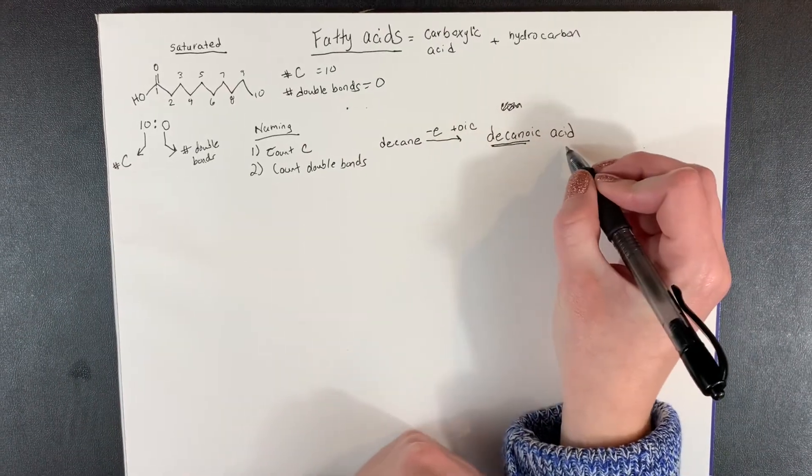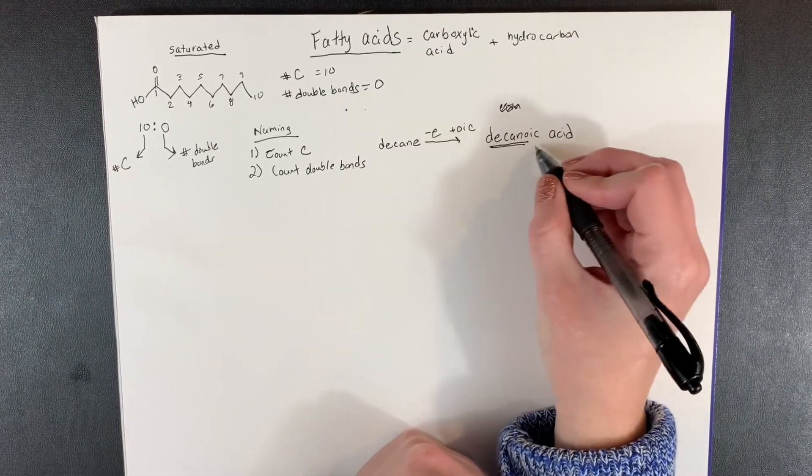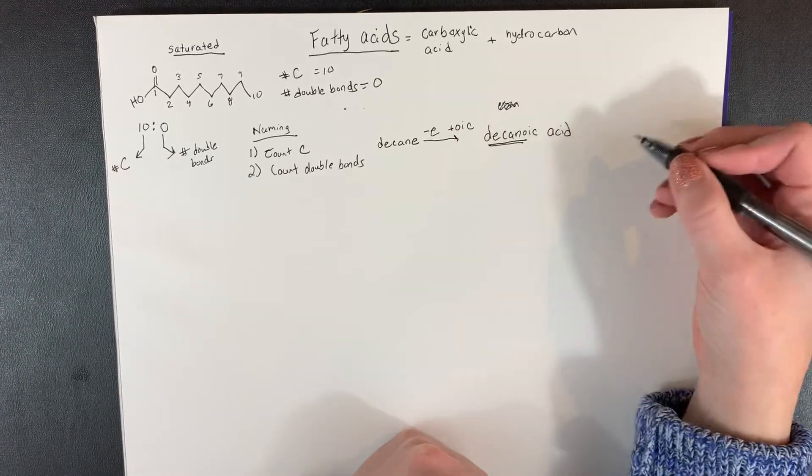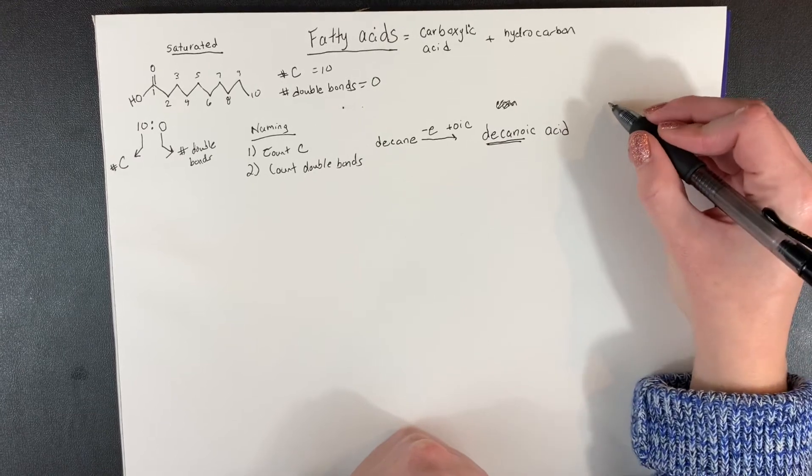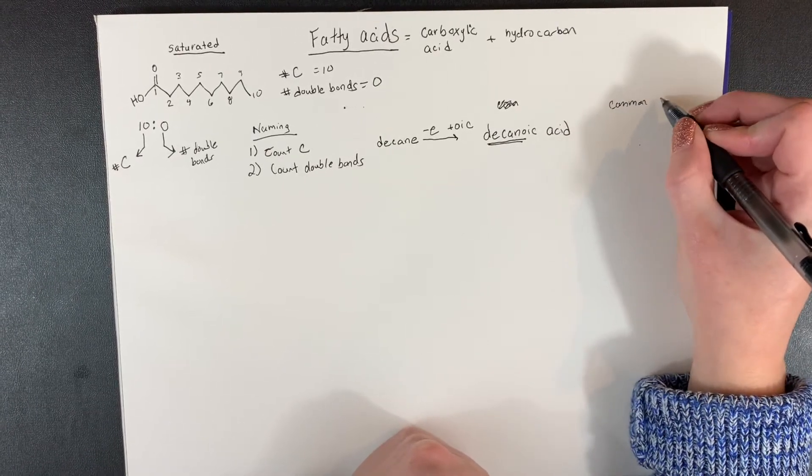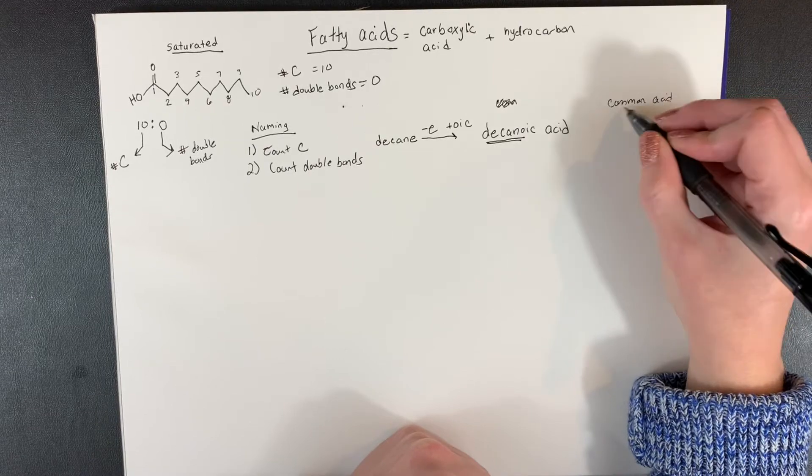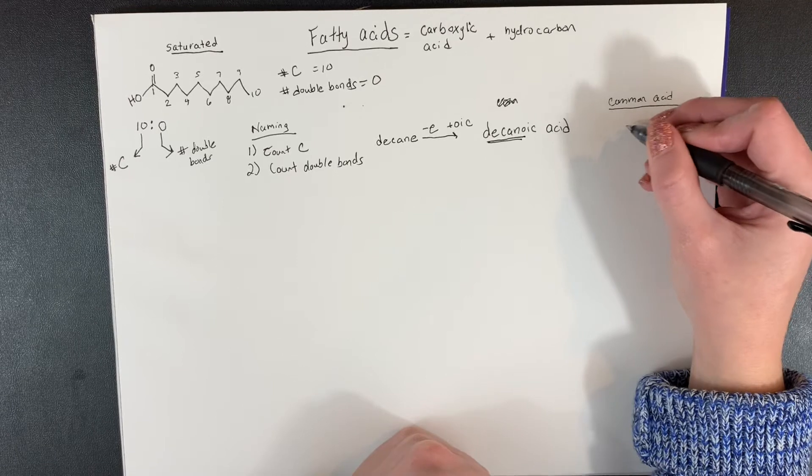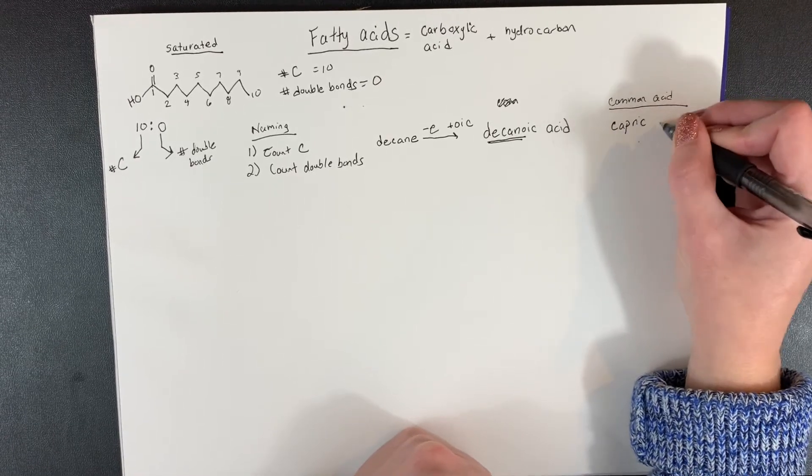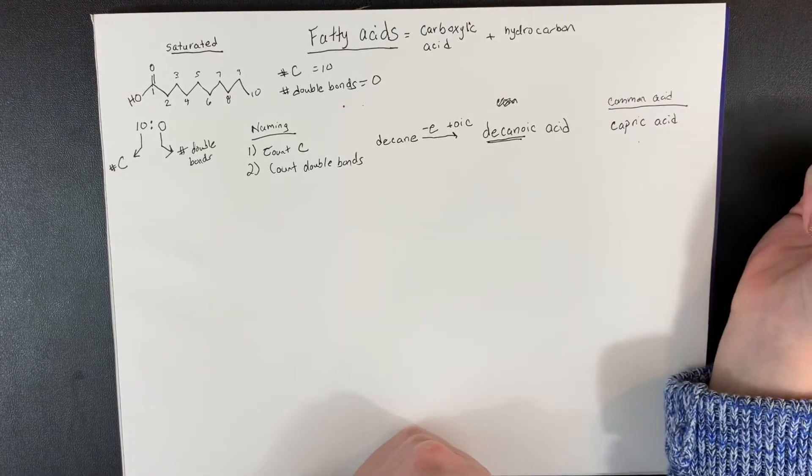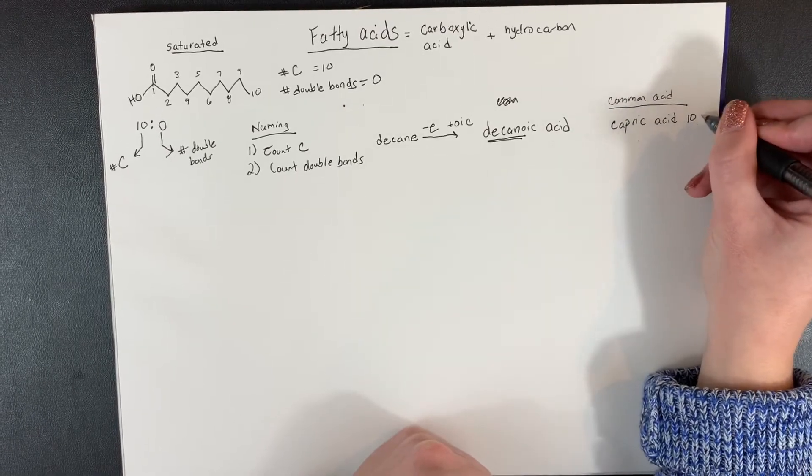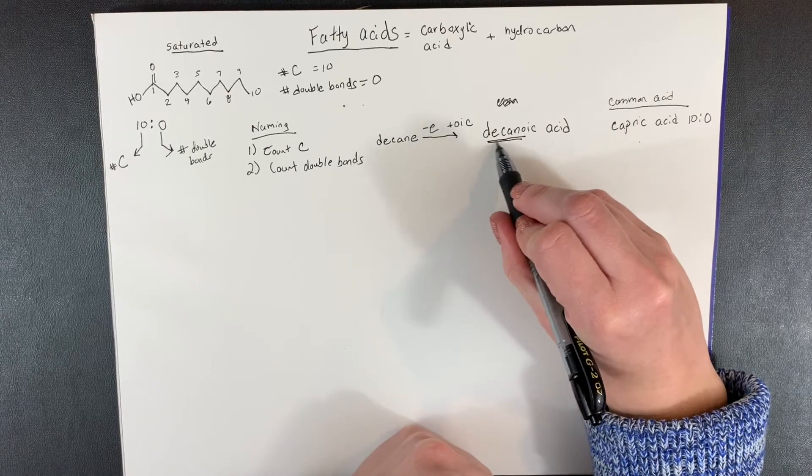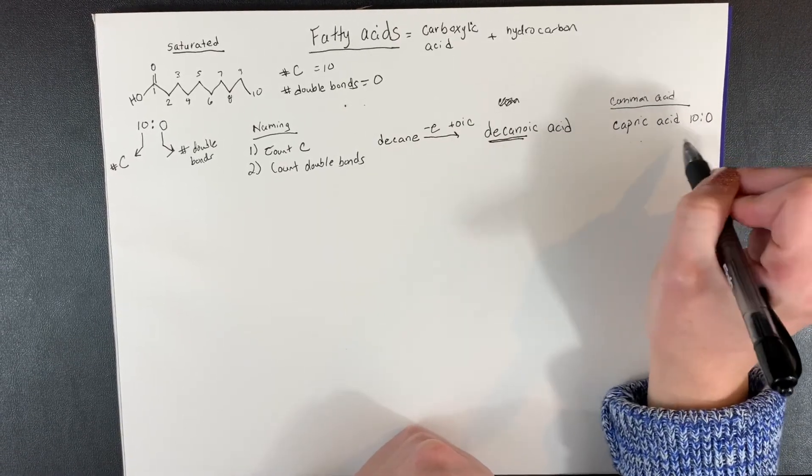Now, a lot of these fatty acids can be named with the systematic name where you're using basically your knowledge from chemistry. But most fatty acids we use in food also have a common name. And most of these you will just have to memorize. This is how other food scientists might talk about these fatty acids. You would hear this just be called capric acid. So capric acid is another way of saying there's 10 carbons and zero double bonds. So you have this old school chemistry way of naming, as well as a common name.